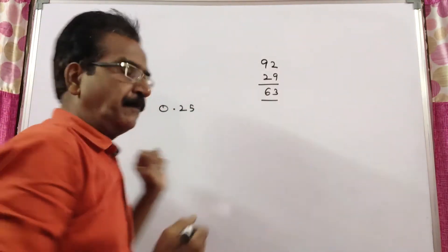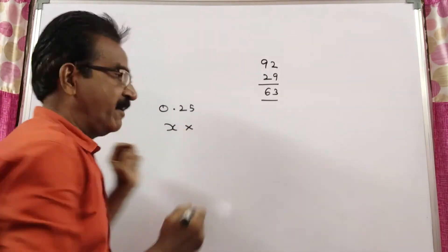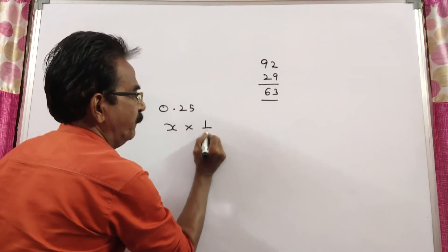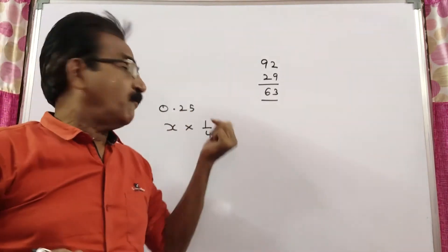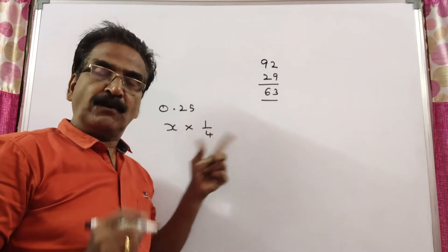Friends, say the total number of students x and average increase, average increase 1 by 4. 0.25 means 1 by 4. So, total number of students x, average increase 1 by 4.